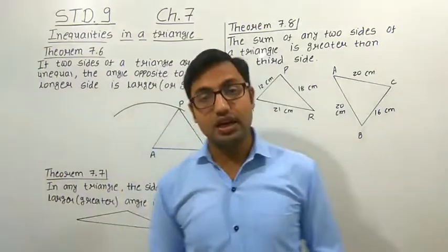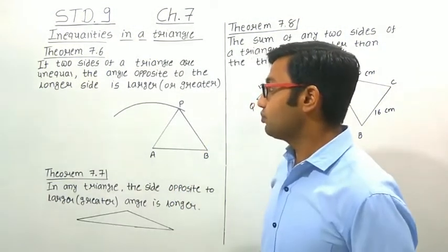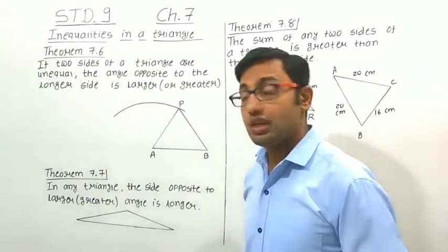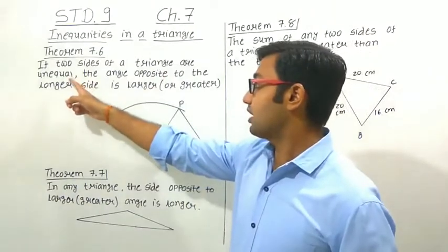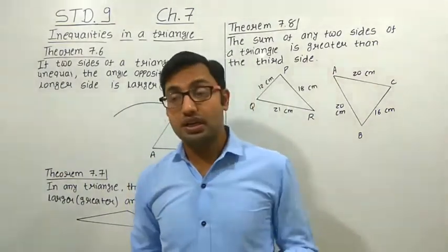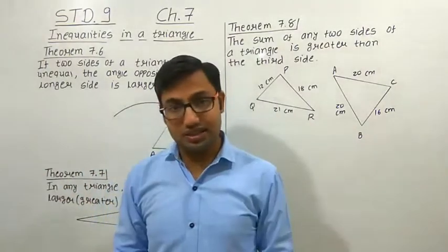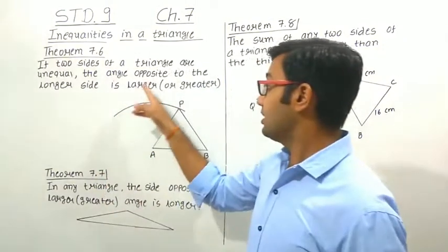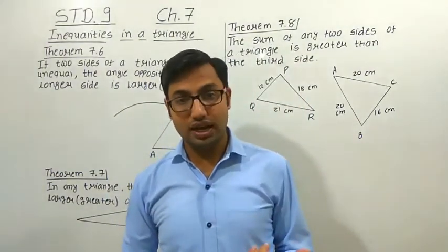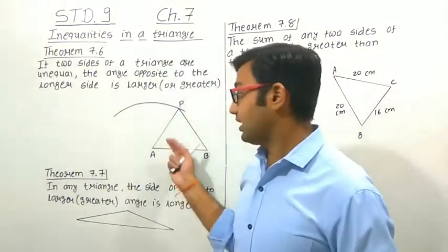In a scalene triangle we have some properties to study. Theorem 7.6 states: if two sides of a triangle are unequal, the angle opposite to the longer side is larger. If two sides are equal we have an isosceles triangle, and we know the opposite angles are equal. But when all three sides are different, the angle opposite to the longer side becomes larger.